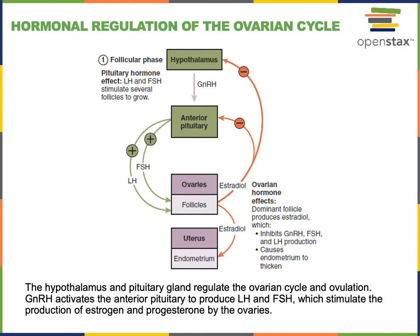The production of estradiol is regulated by a negative feedback control mechanism, where estradiol binds to receptors in cells of the hypothalamus and anterior pituitary gland in order to inhibit the production of GnRH, LH, and FSH.